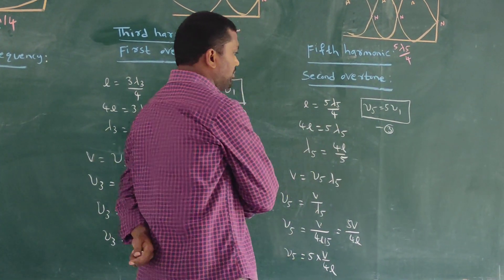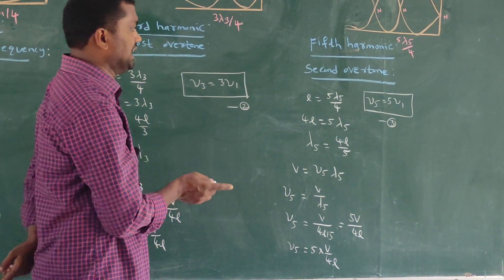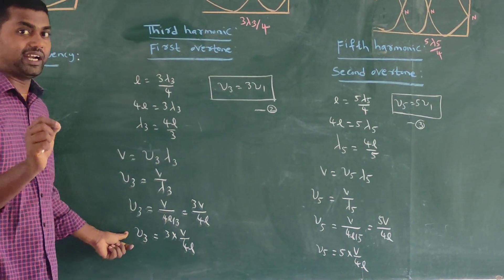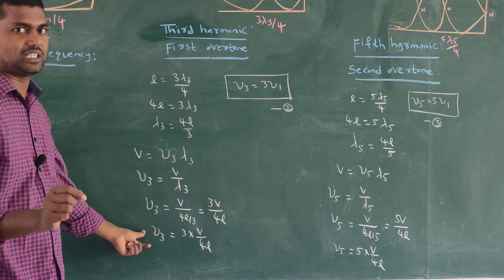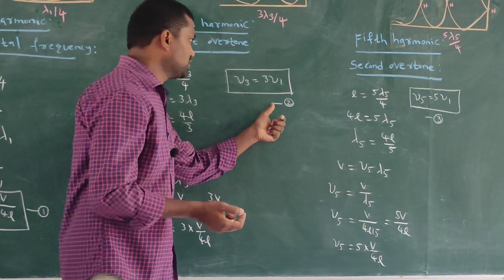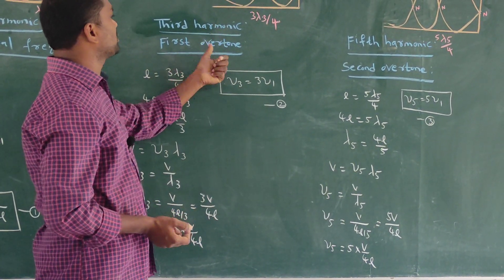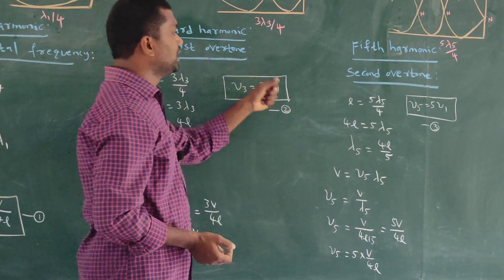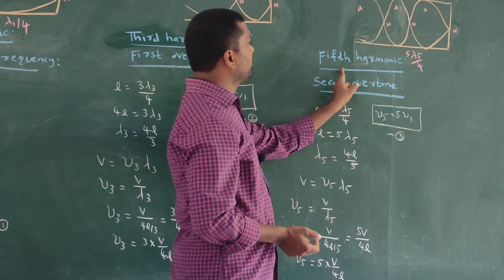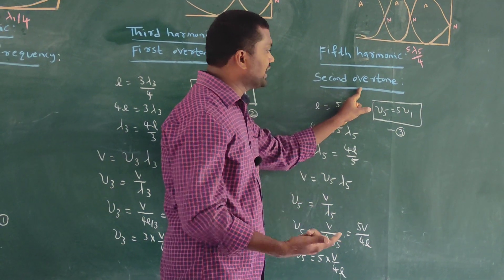Summarizing the three equations: equation number 1 is the fundamental frequency (ν₁ = v/4L), equation number 2 is the third harmonic or first overtone (ν₃ = 3ν₁), and equation number 3 is the fifth harmonic or second overtone (ν₅ = 5ν₁).